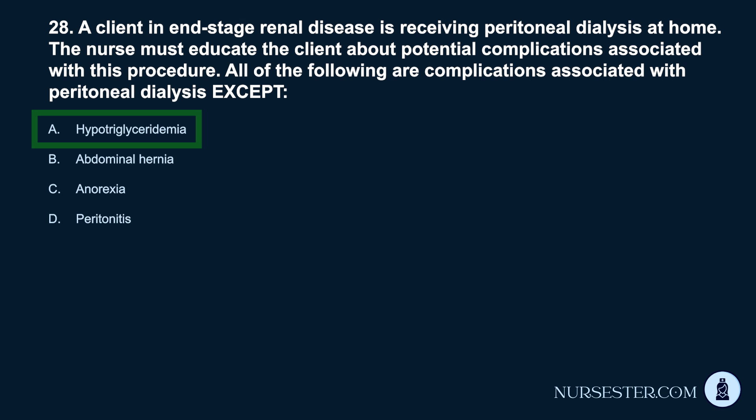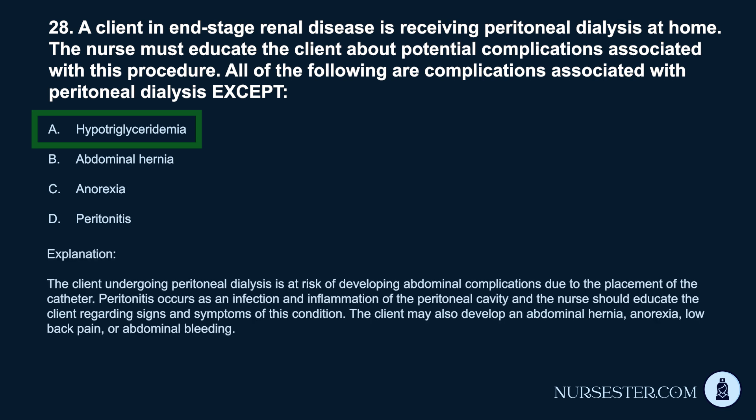Correct answer: A. Hypotriglyceridemia. The client undergoing peritoneal dialysis is at risk of developing abdominal complications due to the placement of the catheter. Peritonitis occurs as an infection and inflammation of the peritoneal cavity, and the nurse should educate the client regarding signs and symptoms. The client may also develop an abdominal hernia, anorexia, low back pain, or abdominal bleeding.